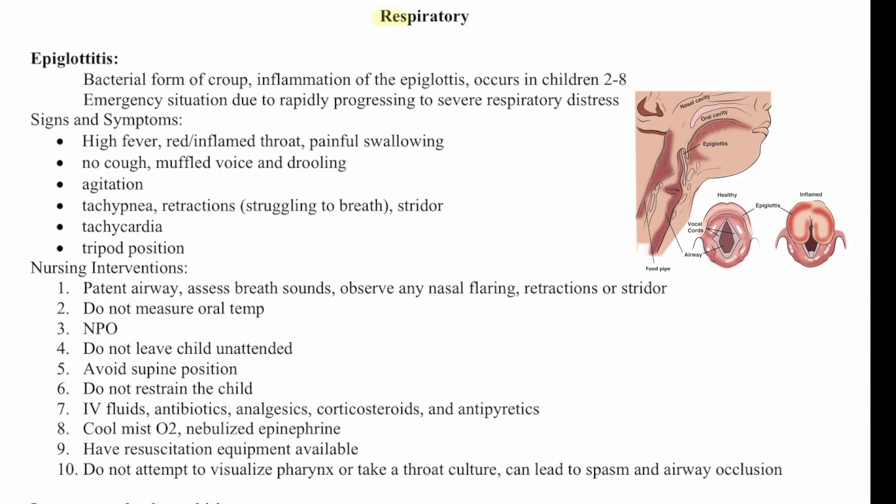Let's talk about the respiratory system in pediatric patients. The first disorder we're going to talk about is epiglottitis. This is a bacterial form of croup — an inflammation of the epiglottis that occurs in children 2 to 8. It's an emergency situation due to the rapid progression to severe respiratory distress.